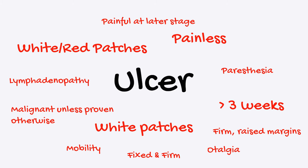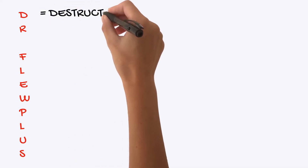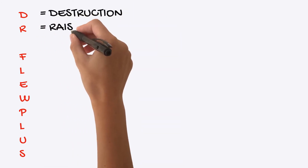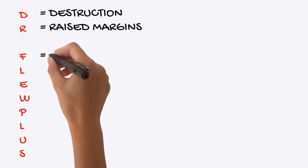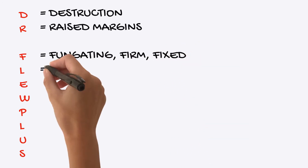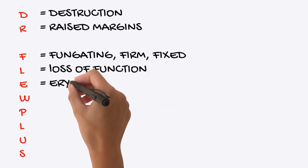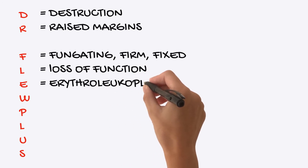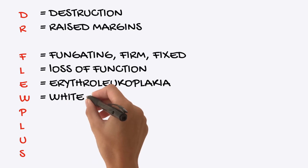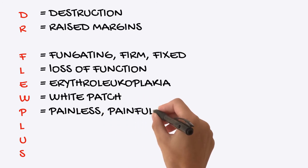To help remember the clinical manifestations of oral cancer, use the mnemonic Dr. Flu Plus. D equals destruction of localised tissues. R is raised margins. F — the lesion could be fungating, firm, and fixed. You could have loss of function, such as paresthesia. E — you might have a combination of erythroleukoplakia as well as erythroplakia. W — you might have a white patch, which is a manifestation of leukoplakia. P — it is painless in its early manifestation but can become painful at a later point.